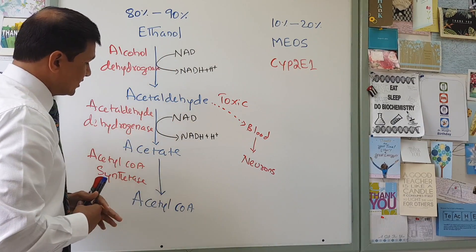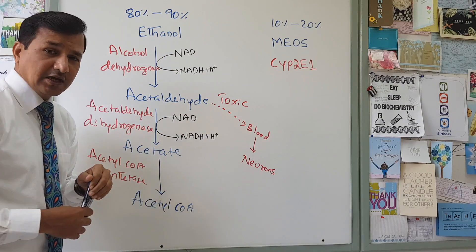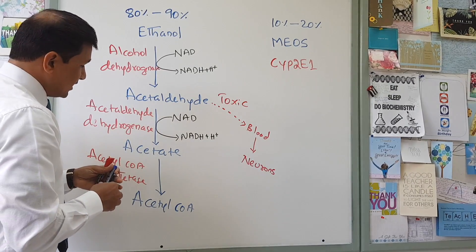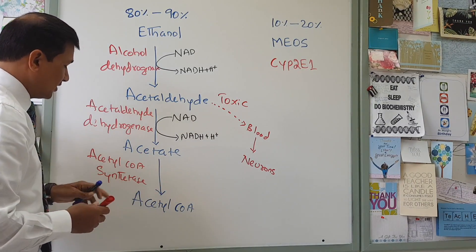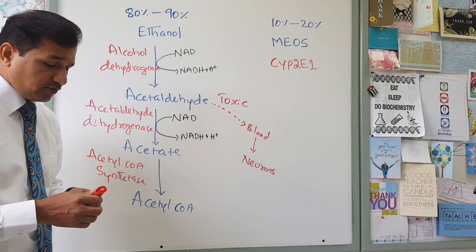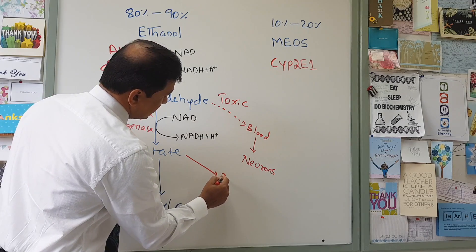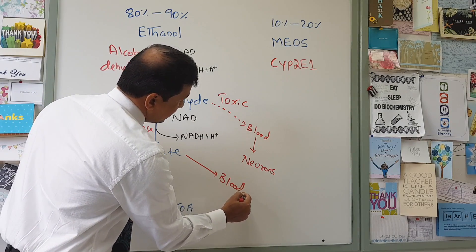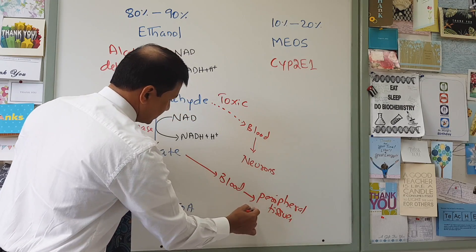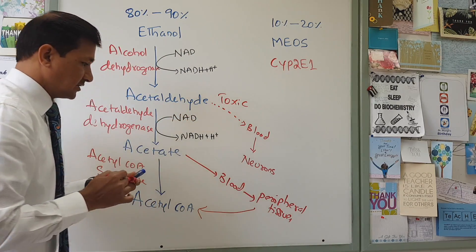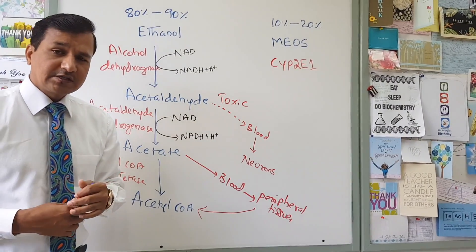Alcohol is metabolized from ethanol to acetaldehyde and acetaldehyde to acetate. Some acetate is converted to acetyl-CoA in the liver by acetyl-CoA synthetase enzyme. Otherwise, the liver puts this acetate into the blood, and from the blood peripheral tissues take it up and convert it into acetyl-CoA, also via acetyl-CoA synthetase enzyme.